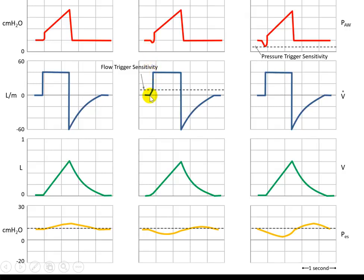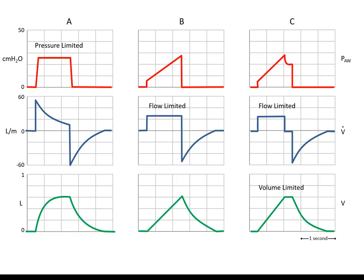In contrast, this breath here is triggered by the patient's initiation of effort. The machine is set to sense for any flow, and once this flow reaches a certain level set by the operator, the breath is triggered. In this other breath, it is also initiated by the patient, but the sensitivity is towards a pressure drop in the circuit. Once the patient creates a negative pressure reaching the set sensitivity level, that negative pressure triggers the initiation of the breath.